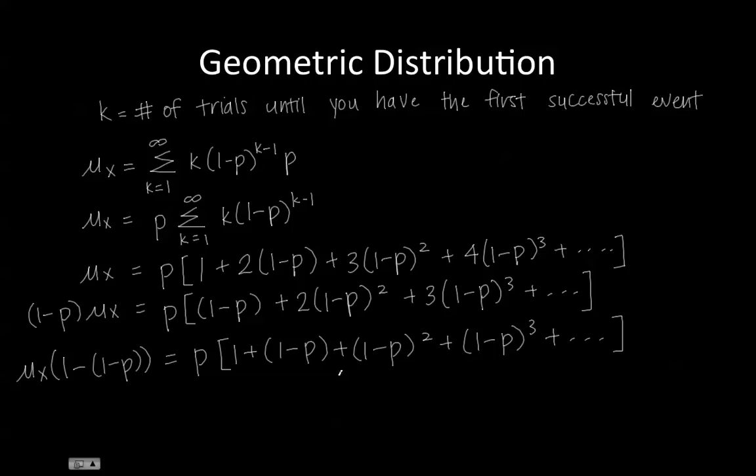So if you guys remember from probably previous math classes, this kind of looks like a geometric series. Well, guess what? It is a geometric series, and in this case, our rate or our value that we're multiplying each time to get the next number in the sequence is 1 minus P.